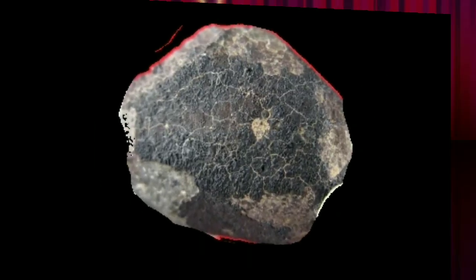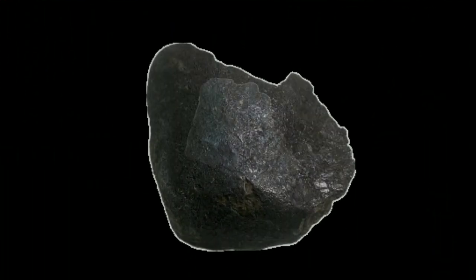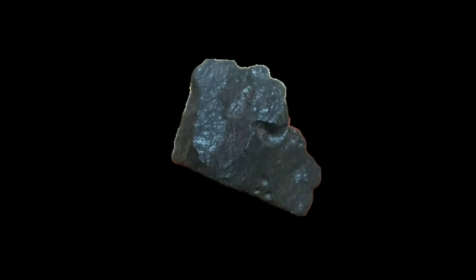Palisites are composed of olivine crystals embedded in a matrix of metal, creating a visually striking appearance. Mesociderites, on the other hand, are a mix of metal and silicate material, often displaying a more intricate structure.